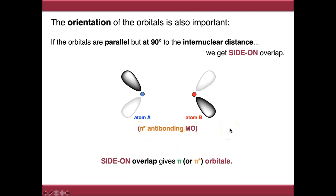So those are our four options: sigma bonding and sigma star anti-bonding, caused by end-on overlap; and pi bonding and pi star anti-bonding, caused by side-on overlap.